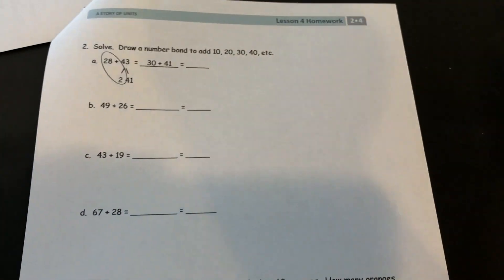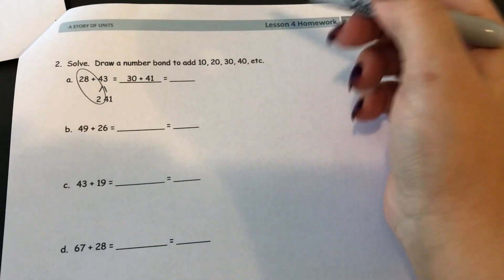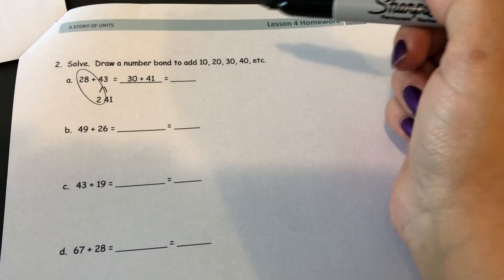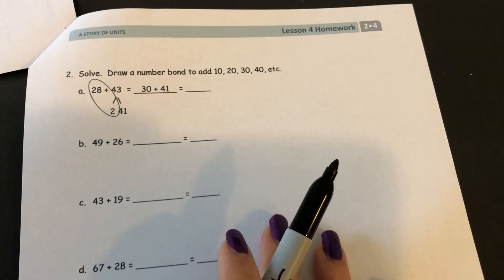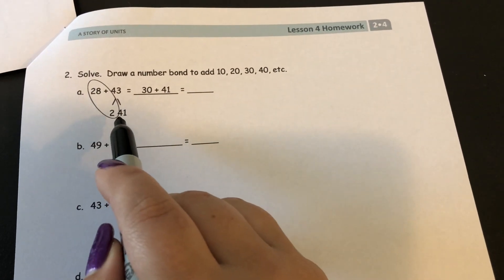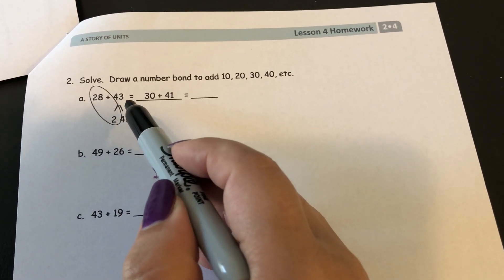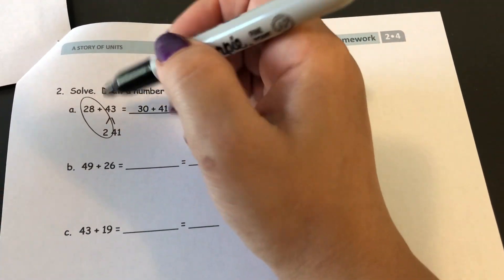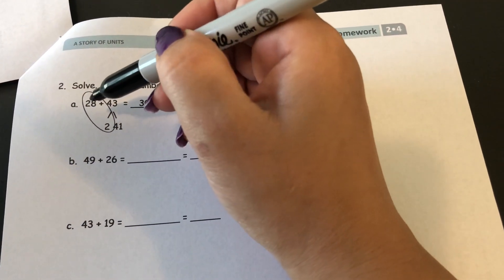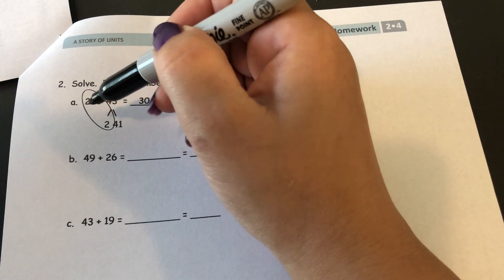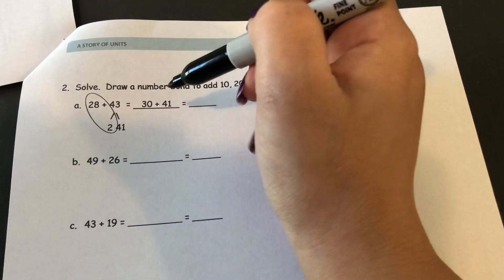And here is another strategy. This one is using a number bond to add. So they started this first one for you. And it has 28 plus 43.